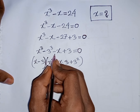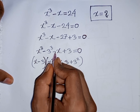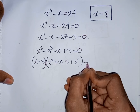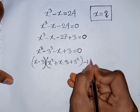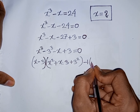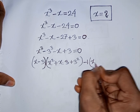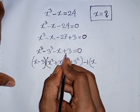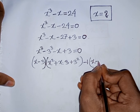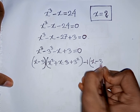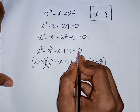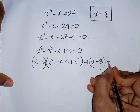Then, from here, we take out common factor minus 1. So, minus 1 comes out of the bracket. This divided by this means it will be x. Then plus 3 divided by minus 1 means it will be minus 3. Bracket close is equal to 0.